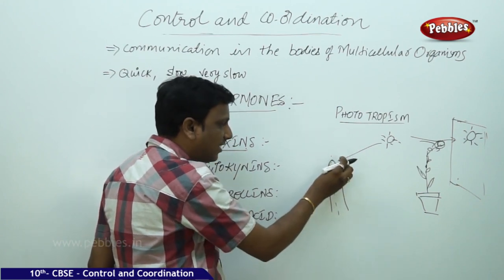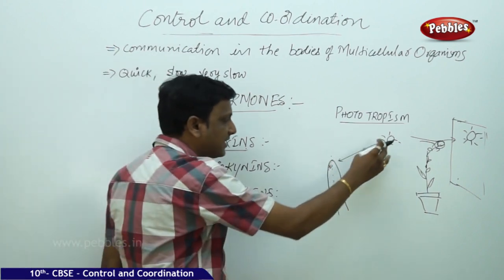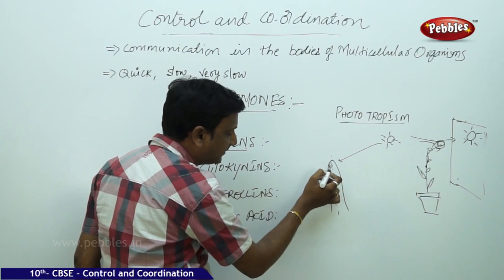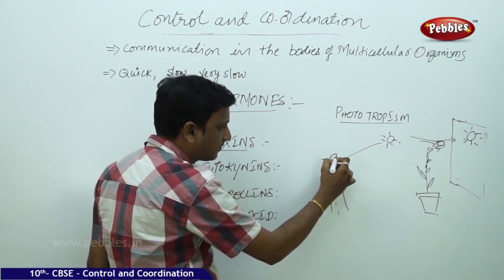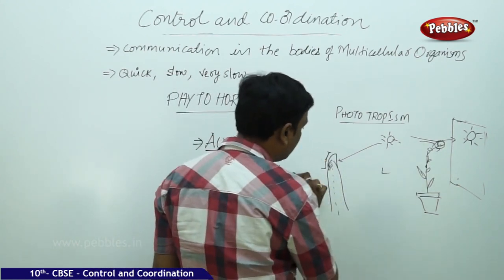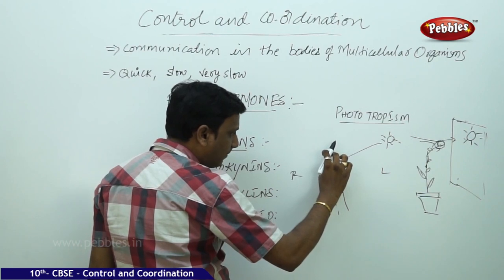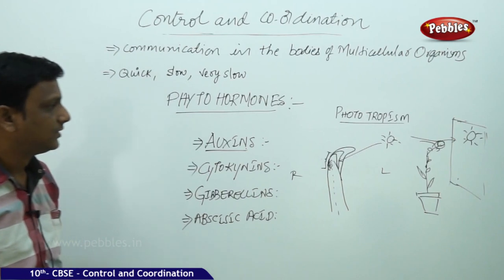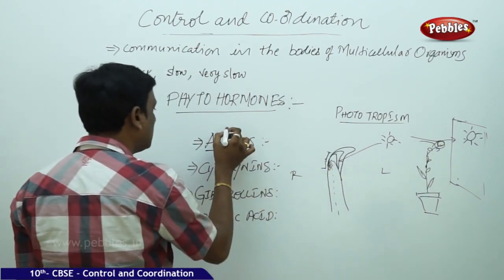With more auxin on the shaded side, that side grows much bigger compared to the sunlit side. So automatically the shoot takes a bend towards the sunlight. This is how the plant bends towards the sun — through the differential distribution of auxin. Auxin is responsible for both phototropism and increasing the height of the plant.